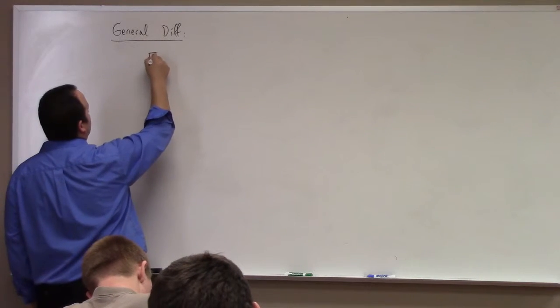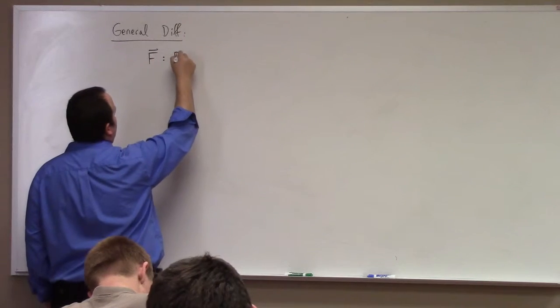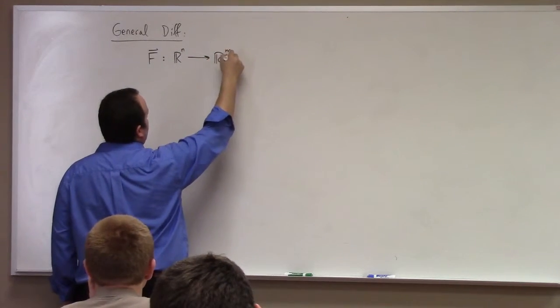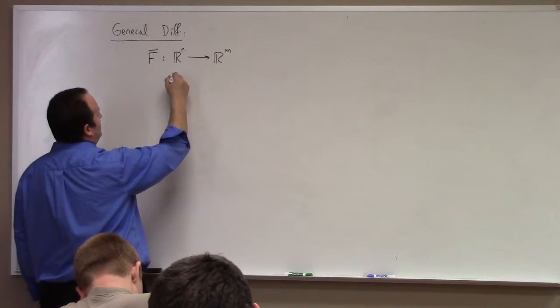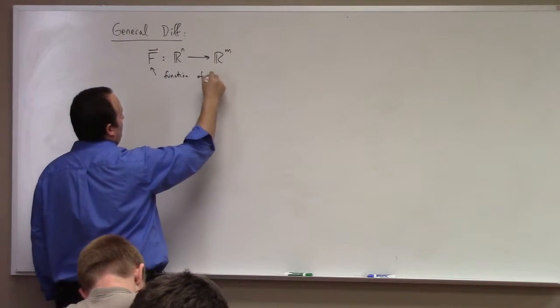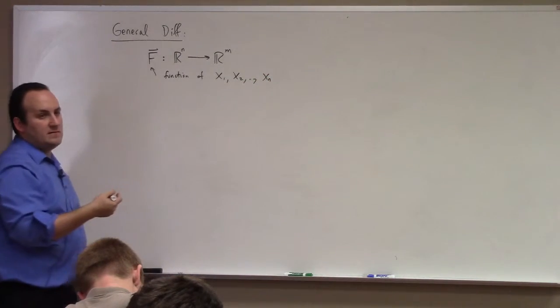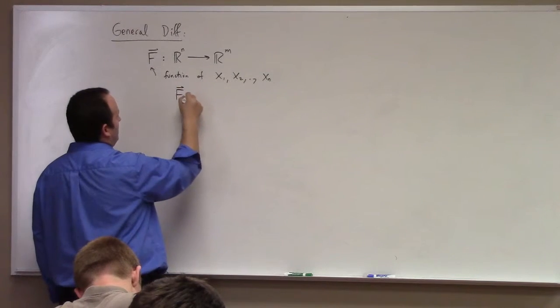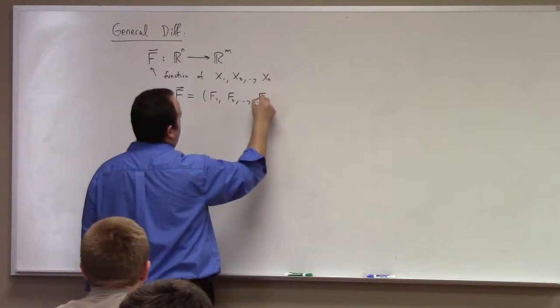Suppose you've got a function. And it's a function, not from just R2 to R3, but it's a function from Rn to Rm. So what that would mean is that it's a function of x1, x2, xn. So there's n variables in the domain. And f itself has component functions, f1, f2, da-da-da, f, fm.